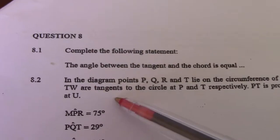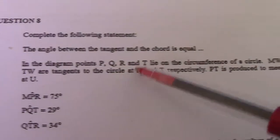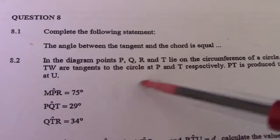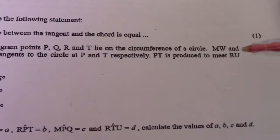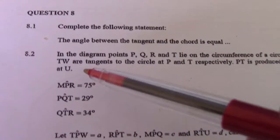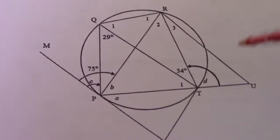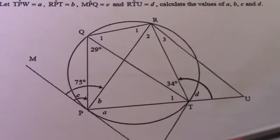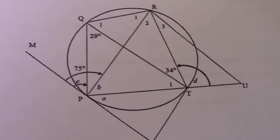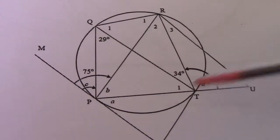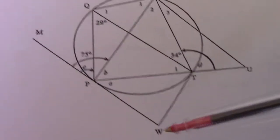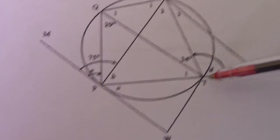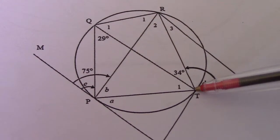In the diagram, points P, Q, R, and T lie on the circumference of the circle. MPW and TW are tangents to the circle at P and T respectively. PT is produced to U. So MPW is a tangent. Where else do I have a tangent? Nowhere else. It's extended there, makes contact at T, but that's where it stops.